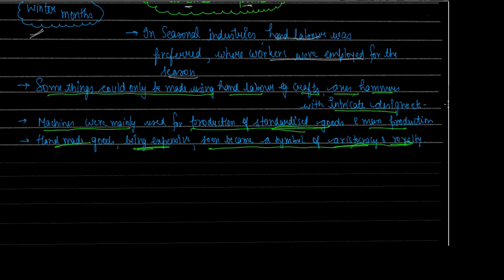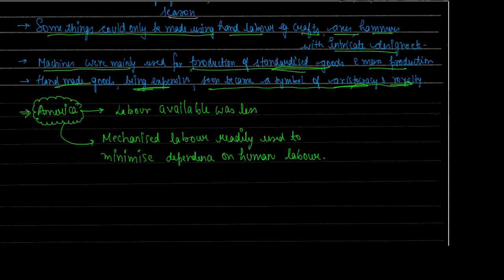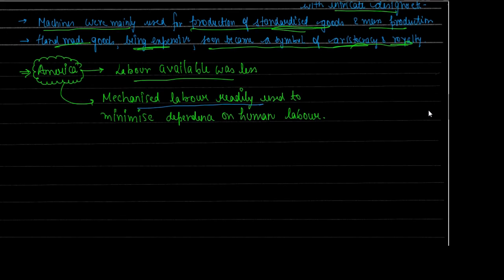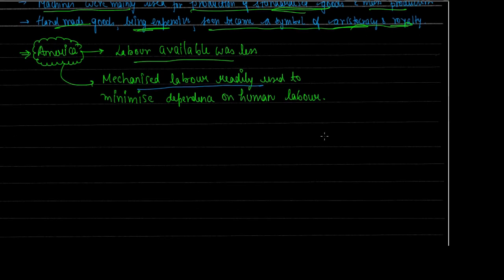Now let's talk about America. In America, labor available was very less — there was no abundance of labor like in Britain. Therefore, mechanized labor was readily used there. Because labor was scarce, wages had to be higher — inversely proportional, as explained. So industrialists in America found it better to use machines, reducing their dependence on human labor. This minimized their dependence on human labor.